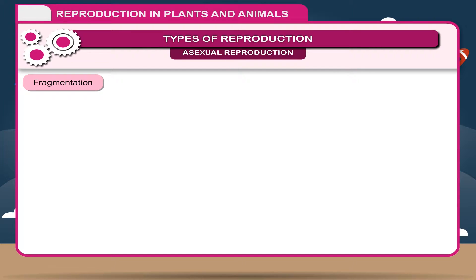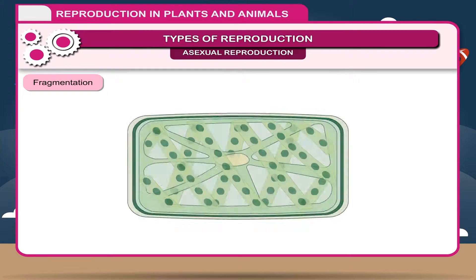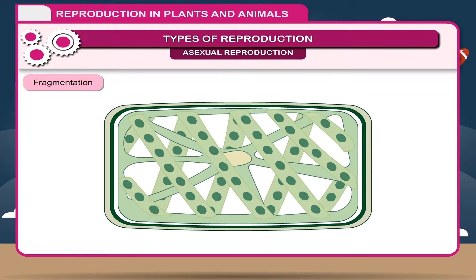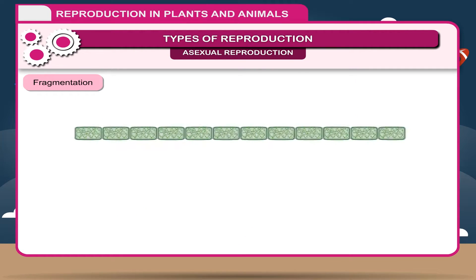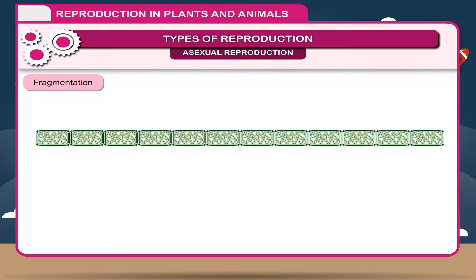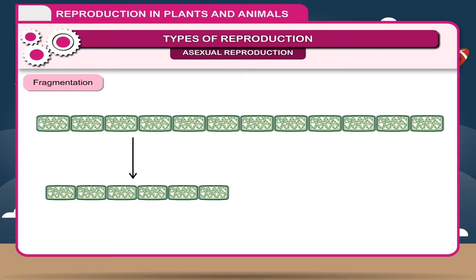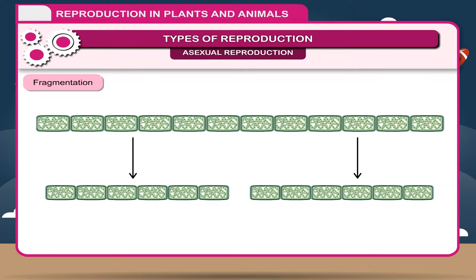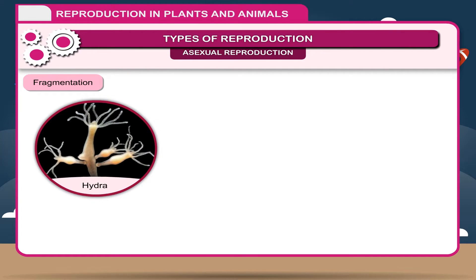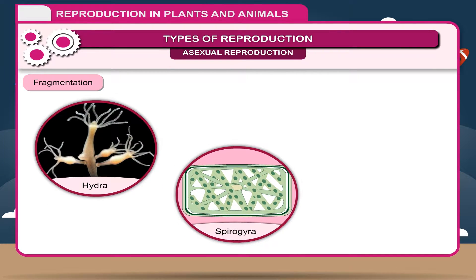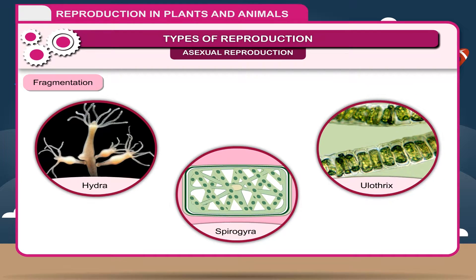Fragmentation. Sometimes the body of an organism is broken accidentally. Each segment or fragment germinates and produces a new individual. For example, hydra, spirogyra, eulothrix, etc.